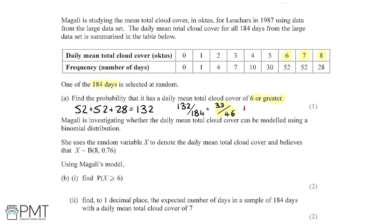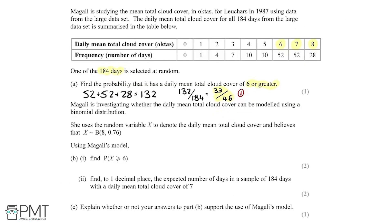We get one mark here for getting the correct final probability, either as a fraction or as a decimal or percentage. Next, Megali is investigating whether the daily mean total cloud cover can be modeled using a binomial distribution. She uses the random variable X to denote the daily mean total cloud cover and believes that X can be modeled by a binomial distribution B(8, 0.76).